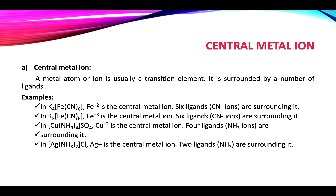The first component is the central metal ion: a metal atom or ion, usually a transition element, surrounded by a number of ligands. For example, in K₄[Fe(CN)₆], Fe²⁺ is the central metal ion and six cyano groups surround it, acting as ligands. In K₃[Fe(CN)₆], Fe³⁺ is the central metal ion and six cyano groups are ligands. In [Cu(NH₃)₄]²⁺, copper is the transition element and four ammonia molecules act as ligands. In [Ag(NH₃)₂]⁺, silver is the central metal ion and two ammonia molecules are ligands.